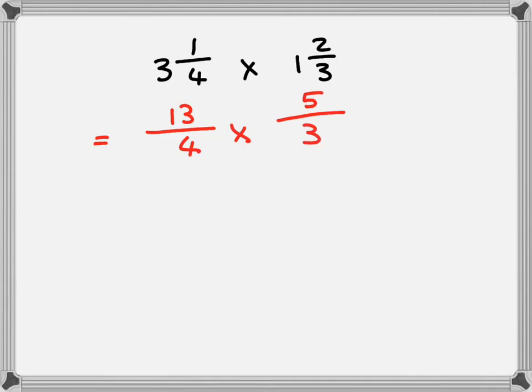13 times 5. In your scribble corner here, 3 times 5 is 15. Carry a 1. 5, 6. So the top row is going to be equal to 65. What's the bottom one going to be? 4 times 3, that'll be 12.